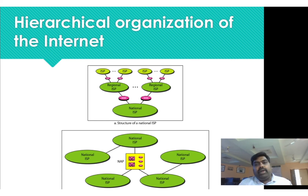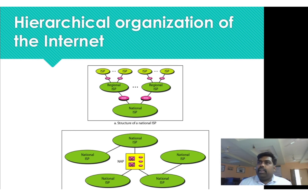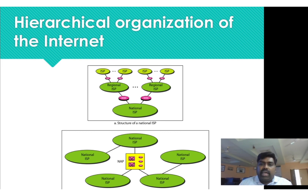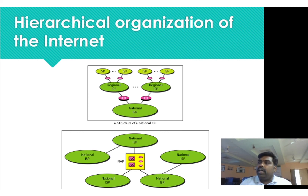The last part is the internet. Even a large number of devices are connected to the internet. If you look at the structure of the internet, it is a hierarchical organization. You will have different layers — each layer provides and supports the internet at different levels.